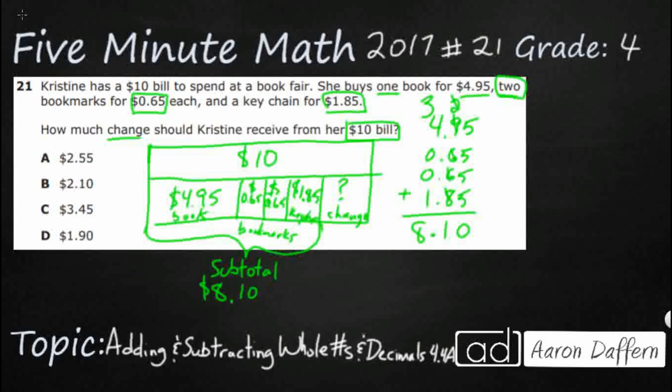Now, you'll notice that $8.10 is not one of the answer choices A, B, C, or D — because we're not asking how much she spent, we're asking for the change. So $8.10 plus the change is going to get you back up to that $10. So really what we need to do is subtract.